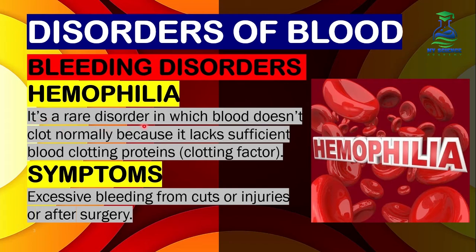Hemophilia is a rare disorder in which blood doesn't clot normally because it lacks sufficient blood clotting proteins or clotting factors. In hemophilic patients, blood does not clot as in a normal person because they do not have a sufficient amount of blood clotting factors.